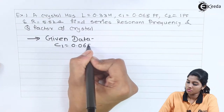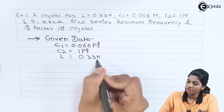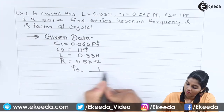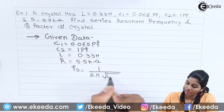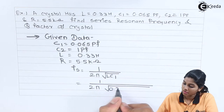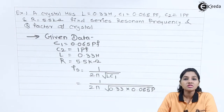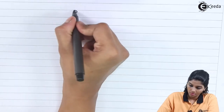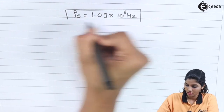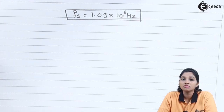Given: C1 equals 0.065 pF, C2 equals 1 pF, L equals 0.33 Henry, and R equals 5.5 kΩ. The formula for Fs is 1 upon 2π times the square root of L·C1, which equals 1 upon 2π times the square root of 0.33 into 0.065 pF. The value of series resonant frequency is Fs equals 1.09 × 10⁶ Hz. The series resonant frequency is the frequency at which the resonance of the inductor equals that of capacitor C1, which is why we use C1 in the formula.